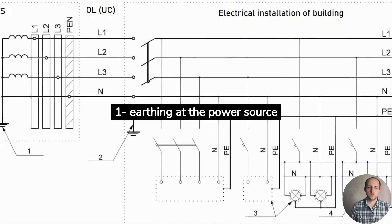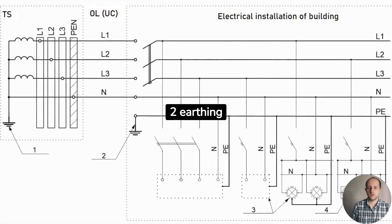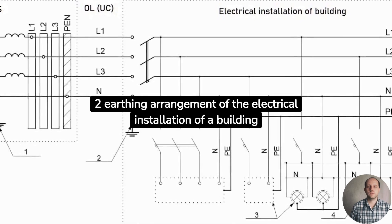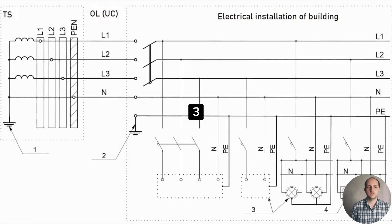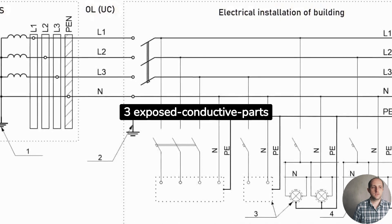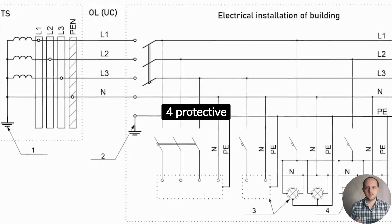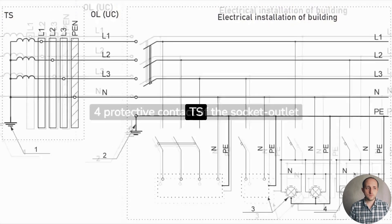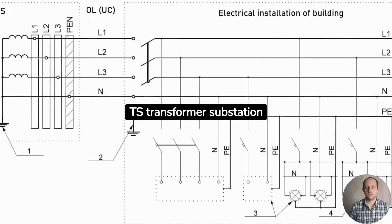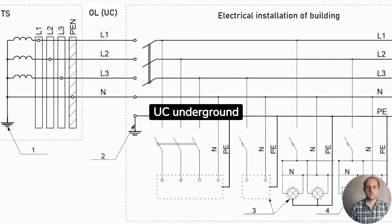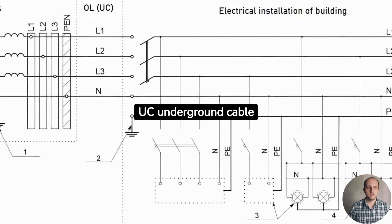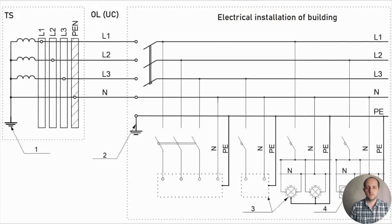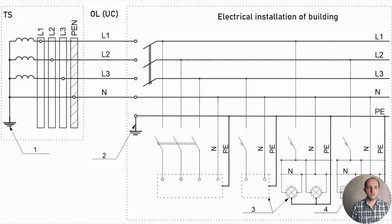The diagram shows: (1) earthing at the power source, (2) the earthing arrangement of the electrical installation of a building, (3) exposed conductive parts, (4) protective contact of the socket outlet. TS denotes transformer substation; underground cable and overhead line (OL) connections are also shown.